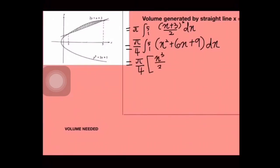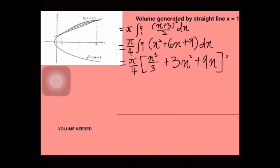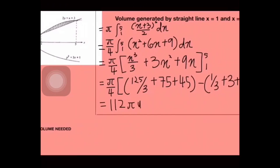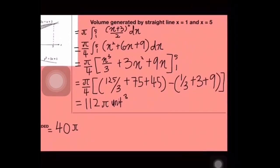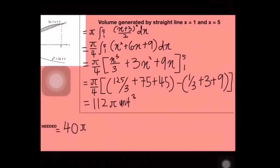Dapat X square tambah 6X tambah 9 per 4, kita keluarkan siap-siap jadi pi per 4 kat situ. Lepas tu baru kita boleh integrate. Integrate dapat X cube per 3 tambah 3X square tambah 9X. Lepas tu kena masukkan nilai 5 dan 1. Masukkan nilai 5 dan 1, dapat 125 per 3 tambah 75 tambah 45, lepas masukkan nilai 1 dapat 1 per 3 tambah 3 tambah 9 tolak.